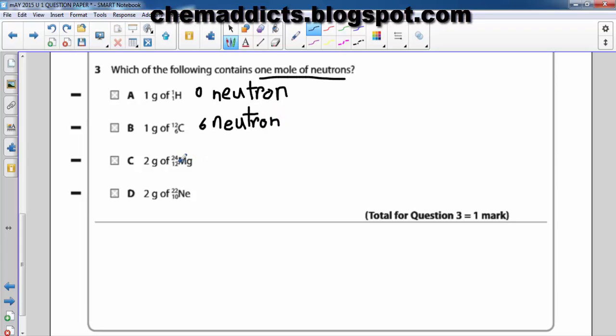Magnesium has 12 neutrons. 24 minus 12 equals 12 neutrons. Neon: 22 minus 10 equals 12 neutrons. Neon has 12 neutrons. All right, now we need to look at the number of moles it has.